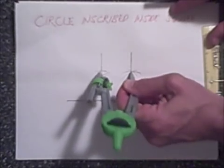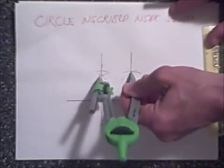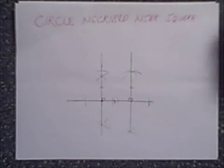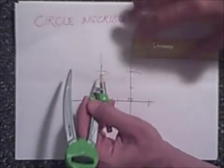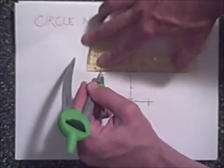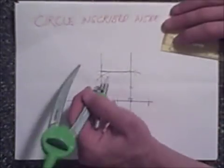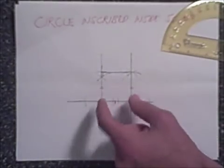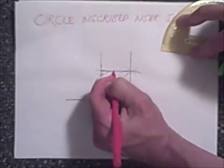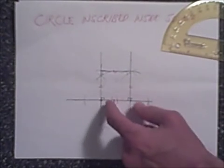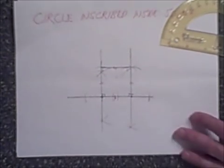Notice how this also intersects. So if we draw a line segment from this point to this point, these are also right angles. Now we have our square — all sides are congruent lengths and these are right angles, so these must be right angles.